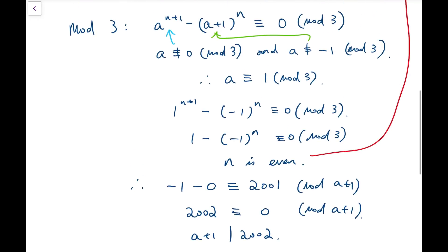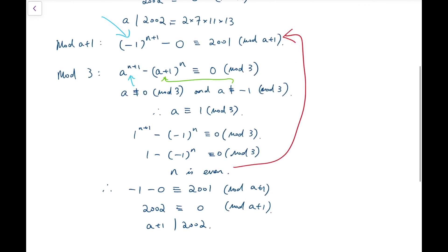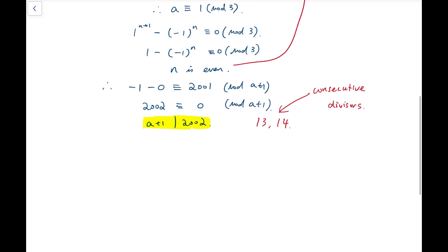Now we can actually solve a already because we know that a is a divisor, and a plus 1 has to be a divisor as well, and in fact there is only one pair of consecutive integers both divided in 2002, which are 13 and 14 consecutive divisors. So that means a must be 13.